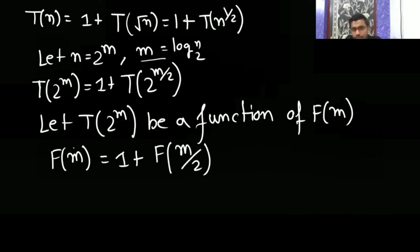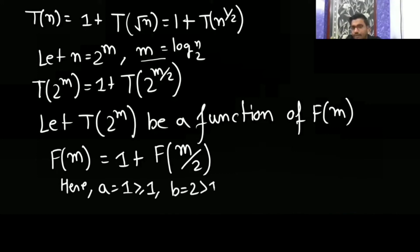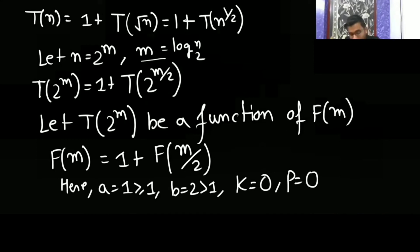Now it is in Master Theorem form: f(m) = f(m/2) + 1, where a = 1 (≥ 1), b = 2 (> 1), k = 0, and p = 0. Comparing a and b^k: a = 1 and b^k = 2^0 = 1, so a = b^k. Since b > 1 and p > −1, then f(m) = Θ(m^(log_b a) · log^(p+1) m).